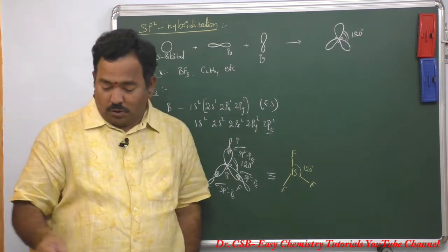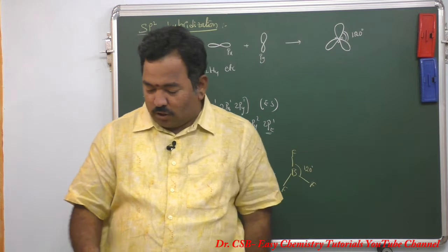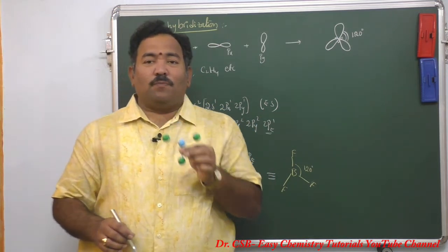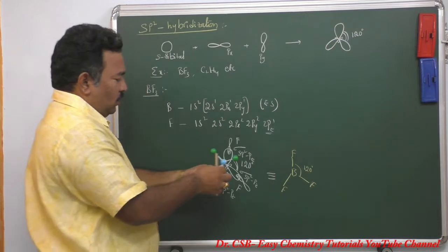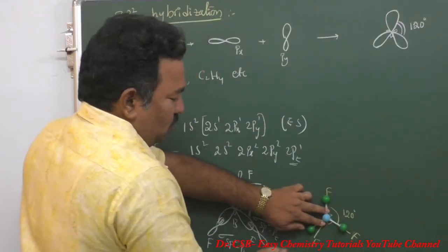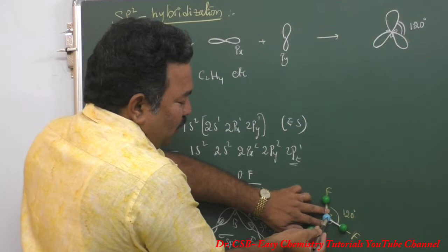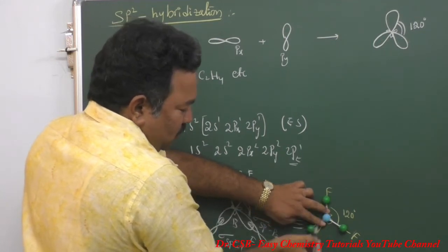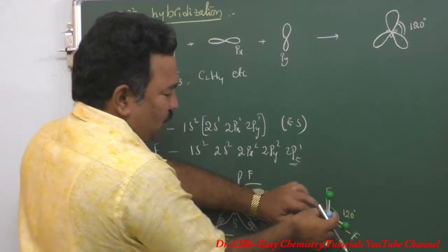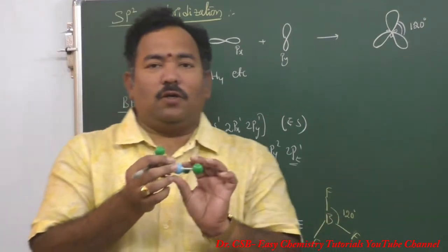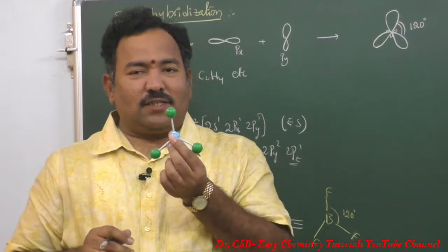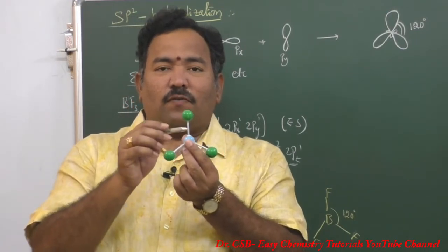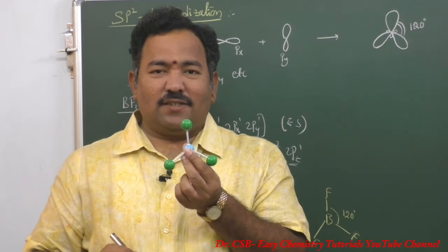Let me show the 3D model for this molecule. This is the 3D model for BF3. The sky blue ball represents the boron atom and the three other balls are the three fluorine atoms. This is a trigonal structure where the bond angle is 120 degrees.